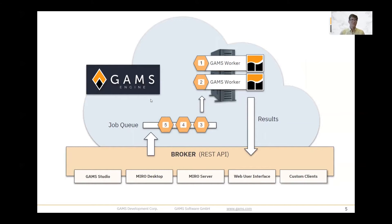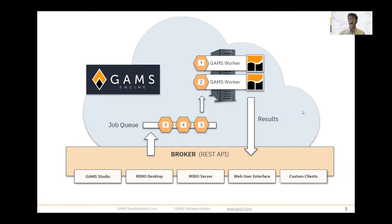Here we have a bird's eye view of GAMS Engine, and we can identify its main components. The first, perhaps the primary component, is the broker. The broker provides a REST API that all clients use to access Engine — for example, GAMS Studio, Miro, the web user interface, and any custom client that you might choose to provide. This is enabled by the OpenAPI specification: a text-based representation of exactly what this API can do in a JSON file, which allows us to automatically create interfaces in a variety of different languages — Python, Java, C++, and more.